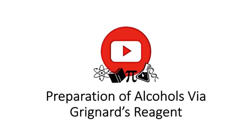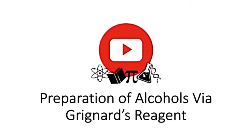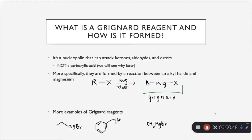In this video, we are going to be talking about how to prepare alcohols using a Grignard reagent. So what is a Grignard and how is it formed? A Grignard is basically a nucleophile and it can attack ketones, aldehydes, and esters. It cannot attack a carboxylic acid though, and we are going to talk about that in great detail later on in the video.